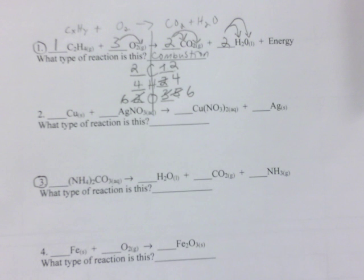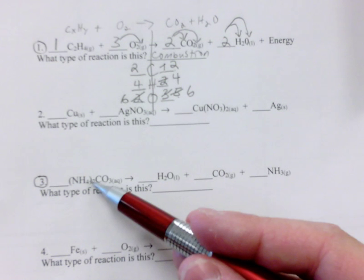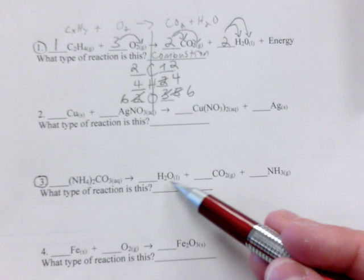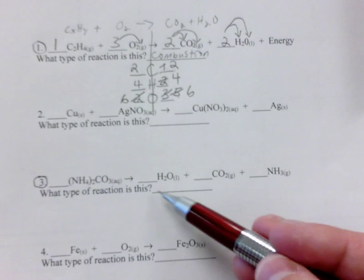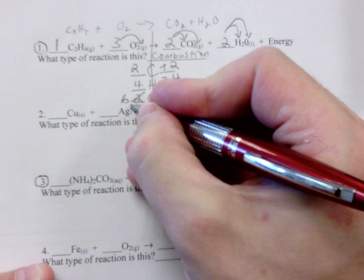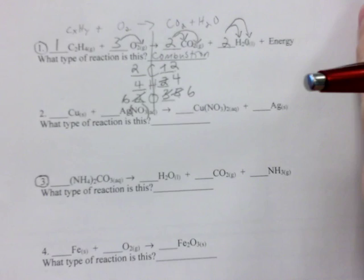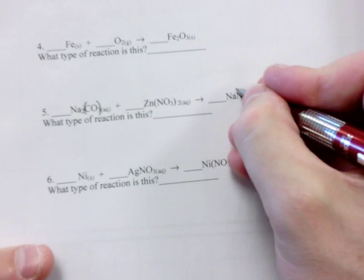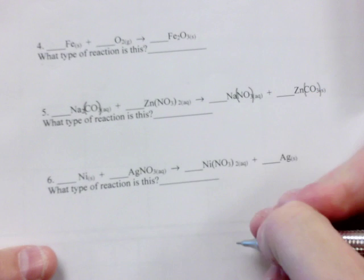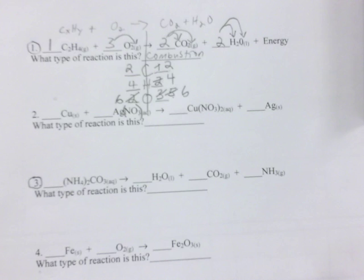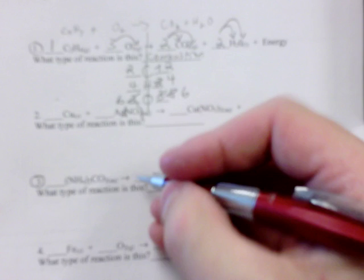Let's skip down to number three. It looks kind of crazy with NH4 in parentheses. Remember the shortcut method: if we see parentheses we might be able to count the number of NH4's on each side, but there are no NH4's on the right side, so we cannot use the shortcut here. For number two you can use the shortcut for NO3's. For number five you can use it for both CO3's and NO3's, and for number six you can use it for NO3's as well. If the shortcut freaks you out, just count all atoms individually.